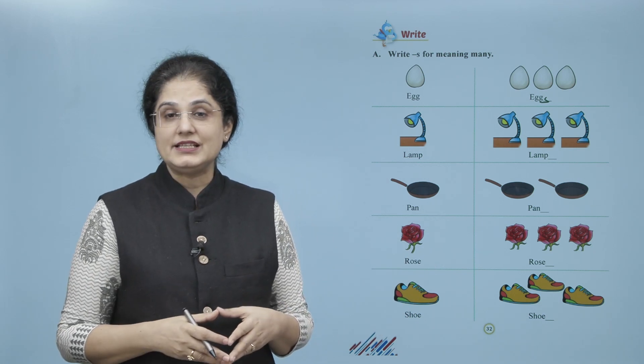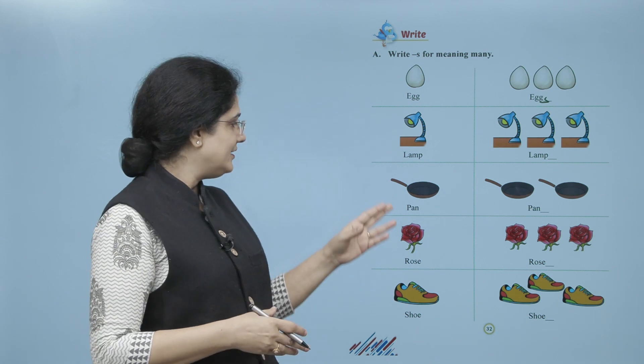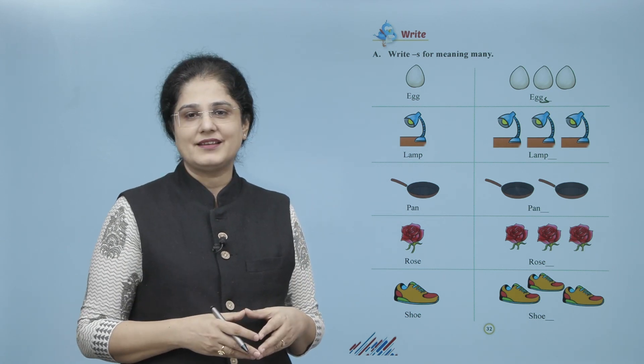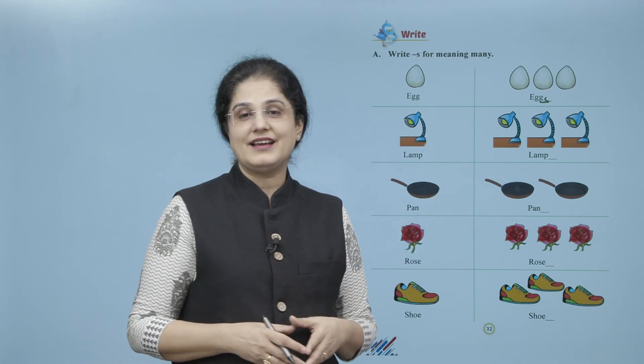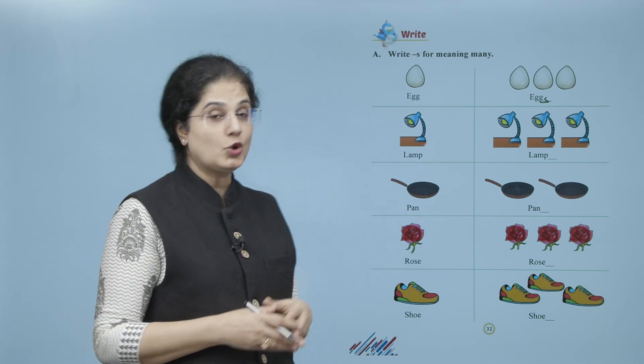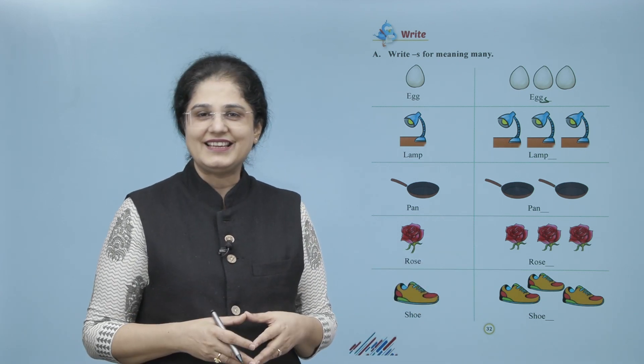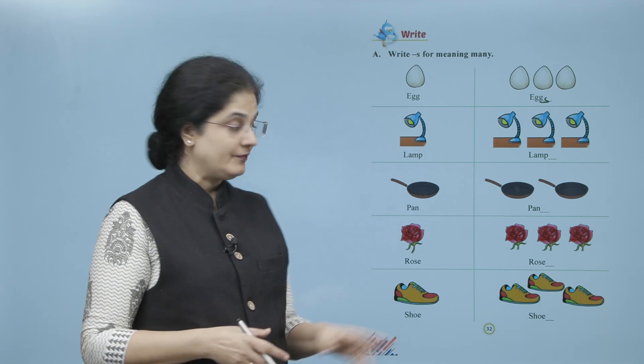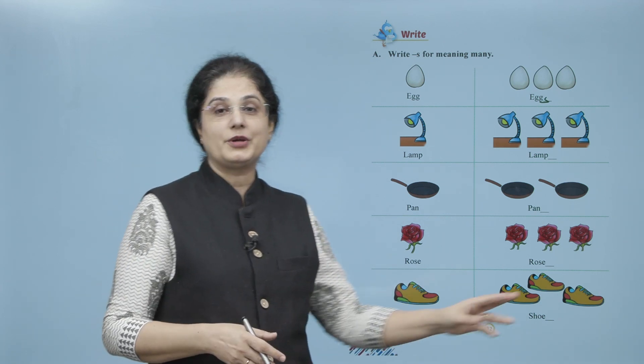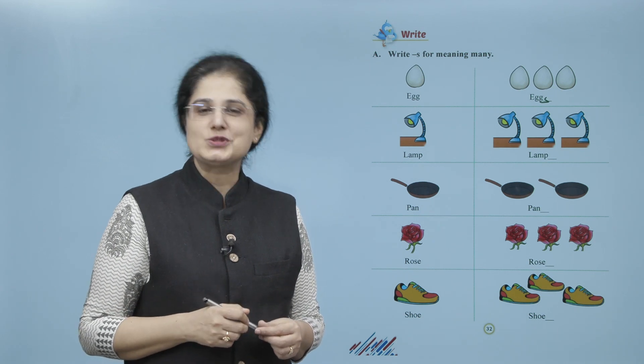Similarly we have lamp, to yahaan pe kya karna hai? Many banane ke liye lamp ke saath hum kya add karenge? S. Yahaan pe kya hai? Pan. Yahaan pe hamne kya karna hai? S add karke pans likhna hai. Idhar rose hai, or yahaan pe kya karna hai? S add karke roses likhna hai. Idhar shoe hai, or yahaan pe kya karna hai? S add karke shoes likhna hai.